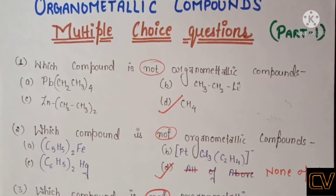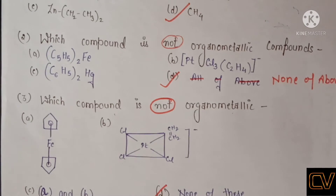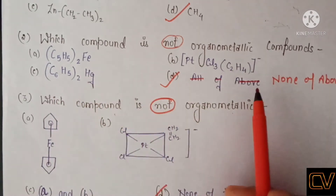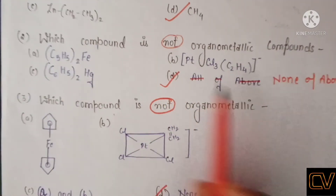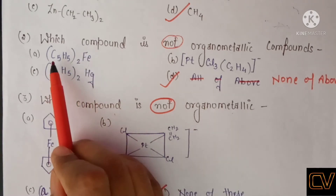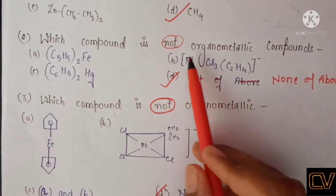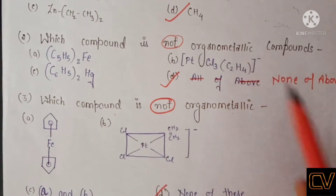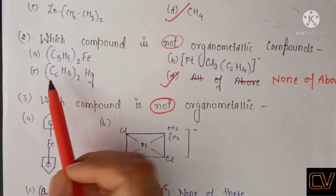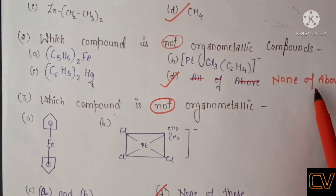The second question is similar — which compound is NOT an organometallic compound? Here you can see four options. Options A, B, and C all have a metal with an organic group attached, making them all organometallic compounds. The fourth option is none of the above.